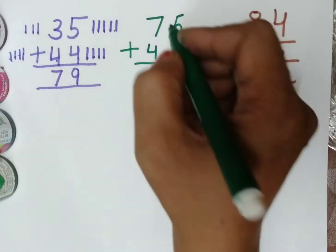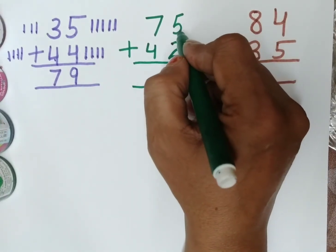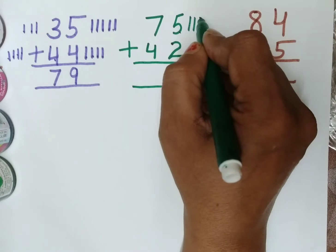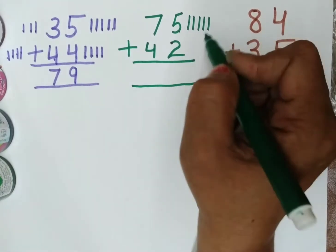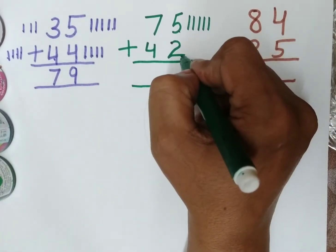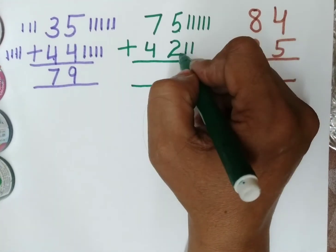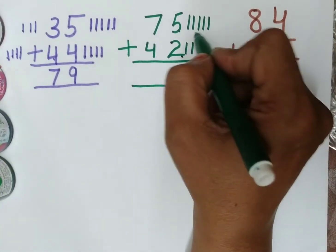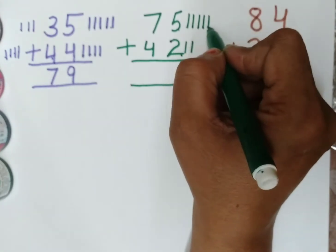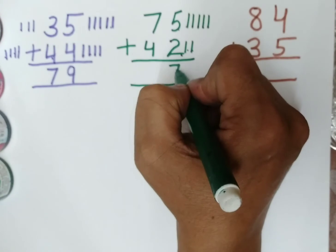Now we will count the 1s place number. What is this? This is 5: 1, 2, 3, 4 and 5. And what is this? Yes, this is 2: 1, 2. We will count all these lines together: 1, 2, 3, 4, 5, 6, 7. This is 7.